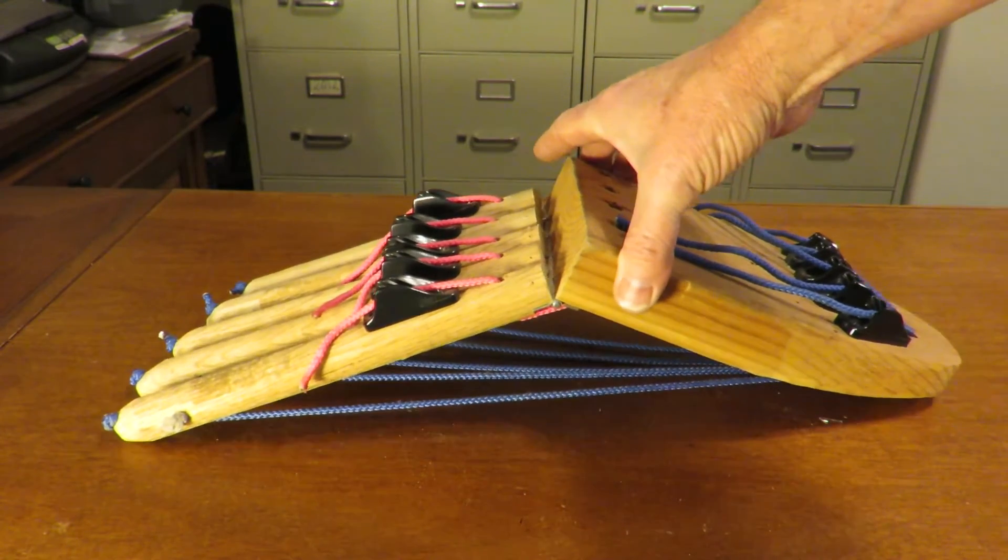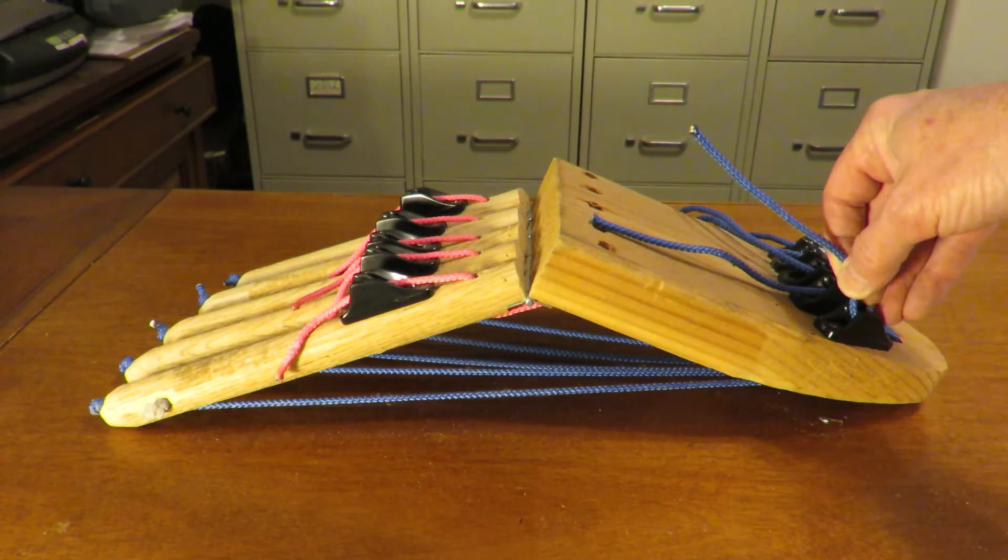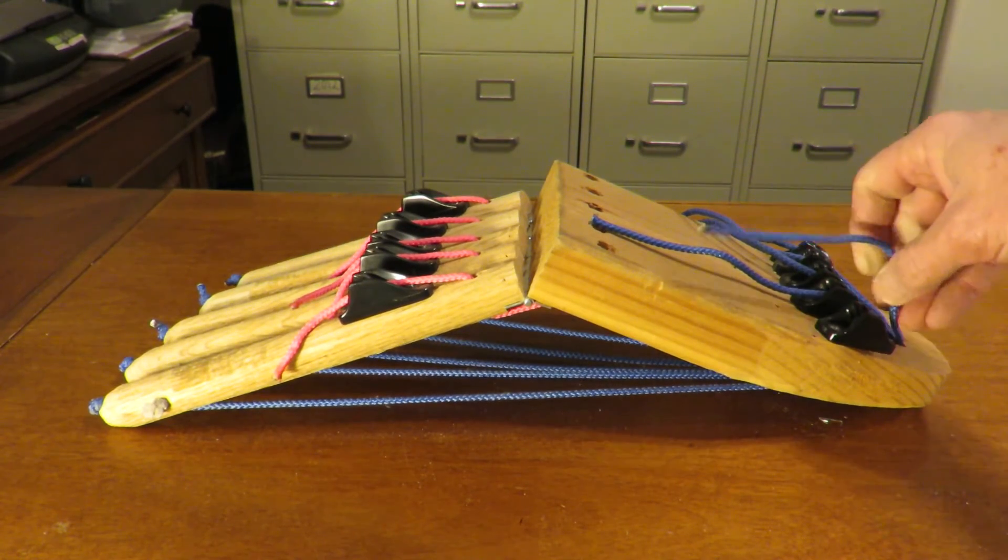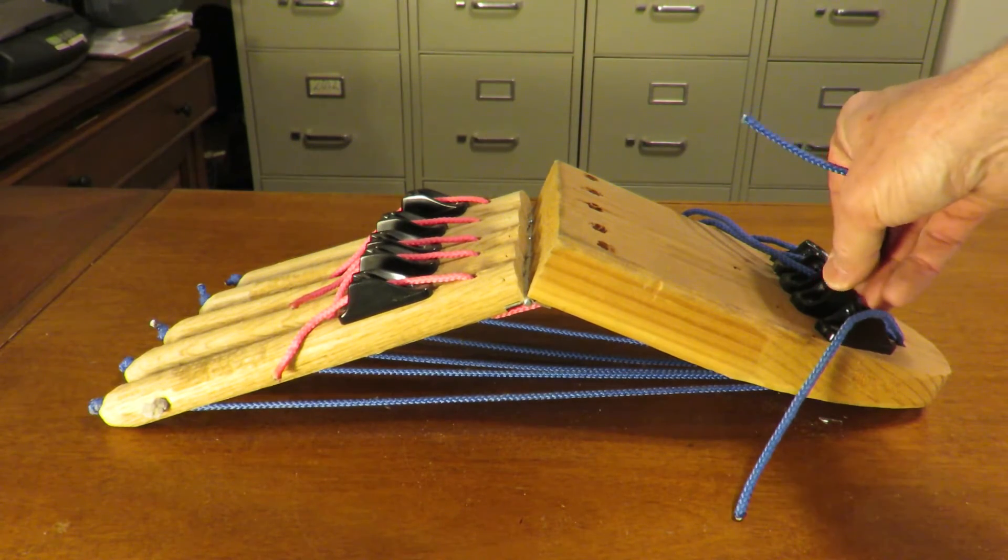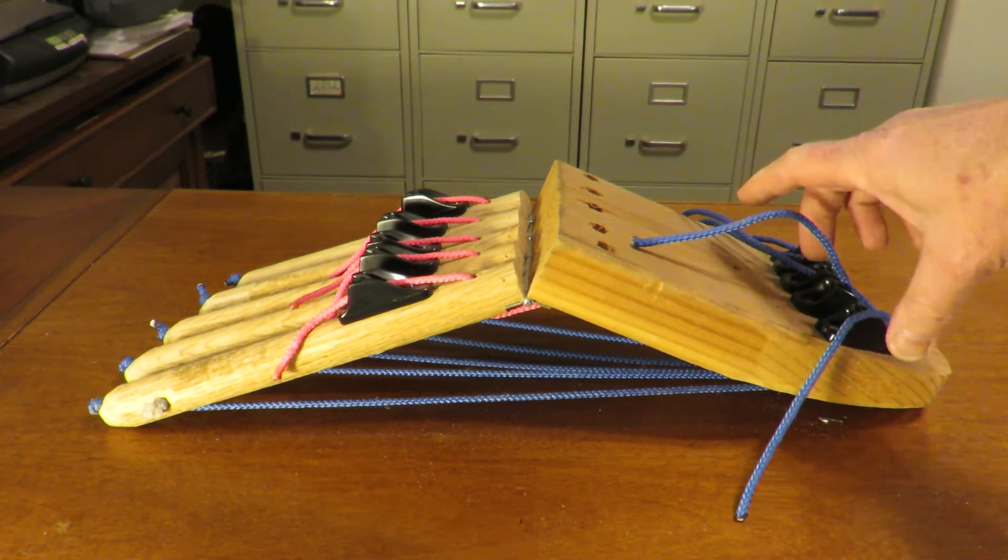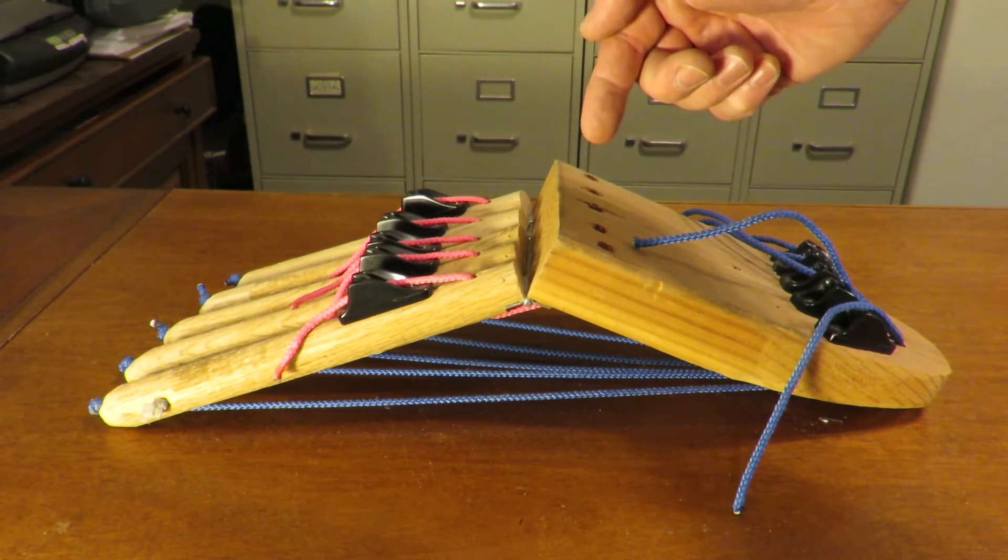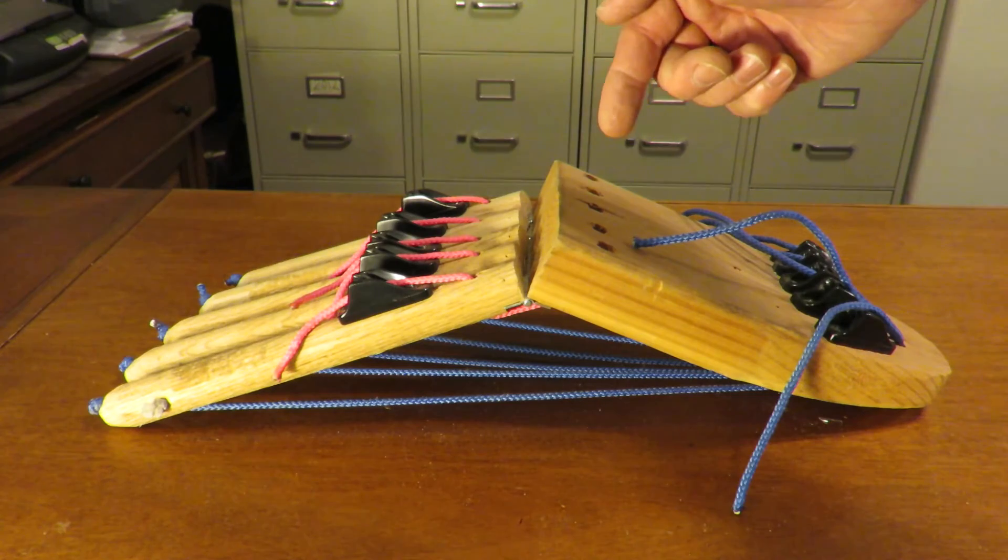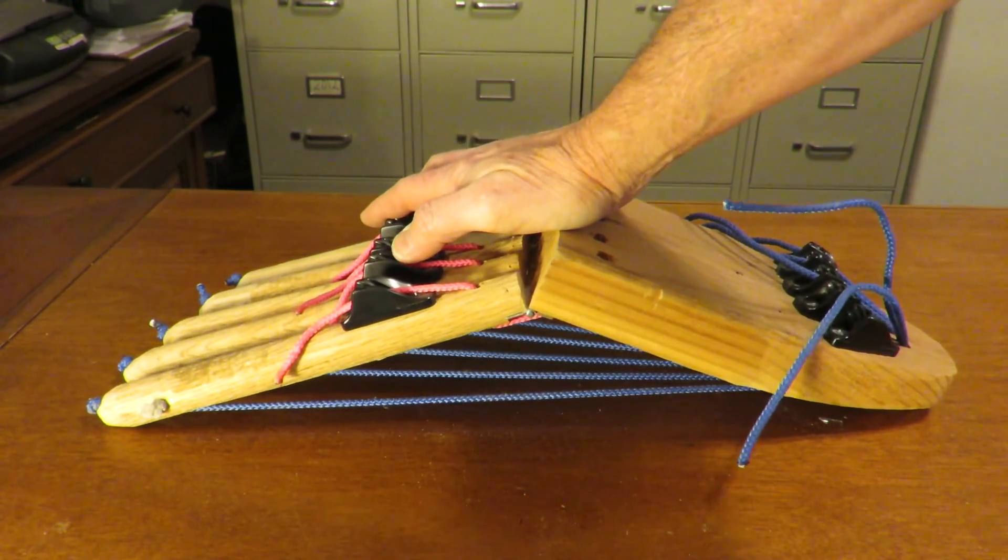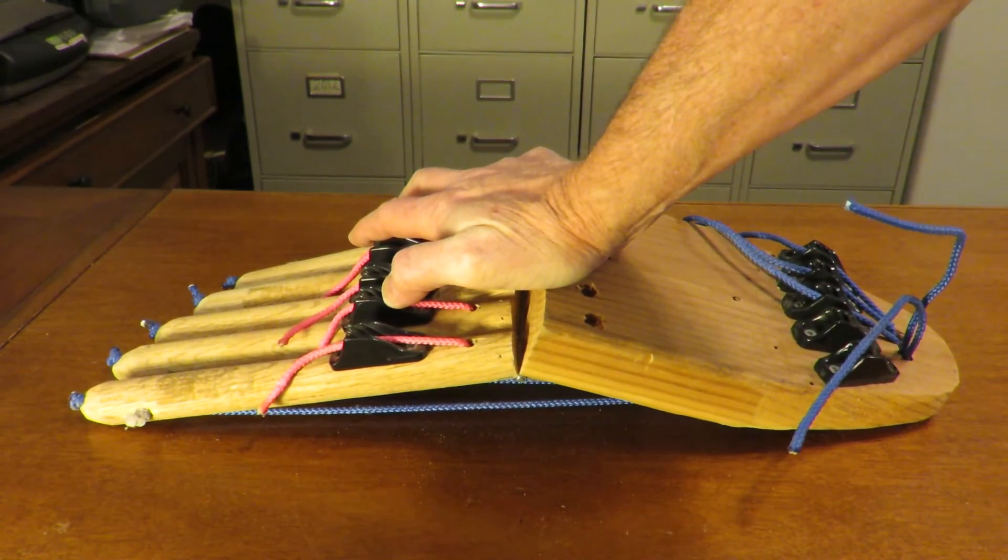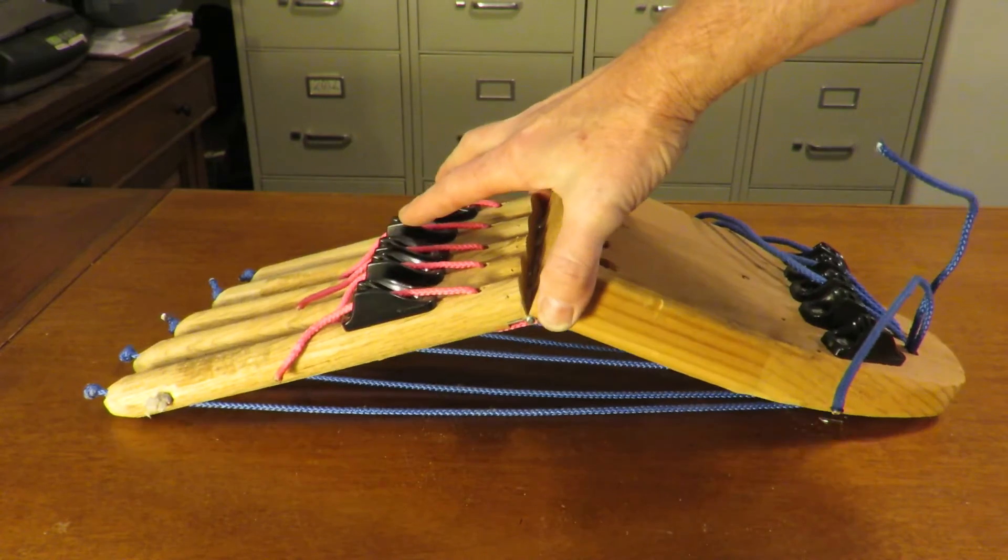What happens now, though, when I take the first metatarsal plantar fascia and the second metatarsal plantar fascia and loosen that up, just as I would if I had done, let's say, a plantar fasciotomy in the medial half of the plantar fascia or a plantar fascial tear. What happens now is that the foot tends to want to pronate. I'll show you that again.